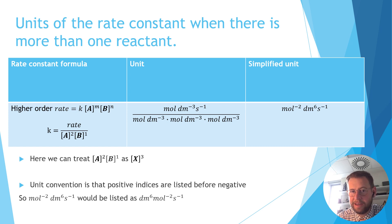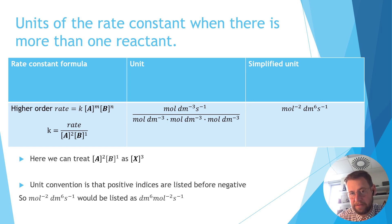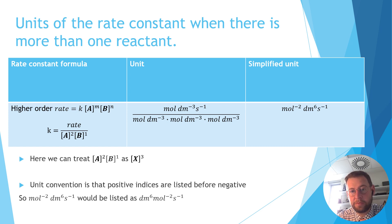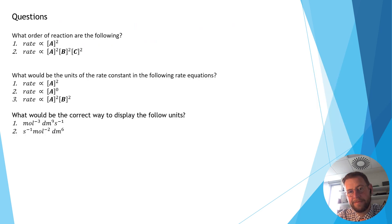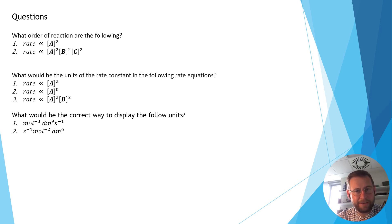One final detail: when we give units, the convention is to list positive indices before negative ones. So while it's mathematically equivalent to say moles to the minus two, decimeters to the six, seconds to the minus one, the convention is to list it as decimeters to the six, moles to the minus two, seconds to the minus one. In the next presentation, we're going to look at putting some numbers into this formula and representing it graphically. Until then, why don't you try these questions?